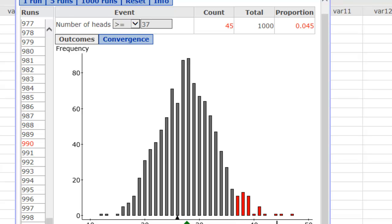38 or more, 39 or more, and so on. So we find the right-hand critical value by changing it to greater than or equal to and lowering the value of the number of heads until the proportion comes as close to .05 as we can get.